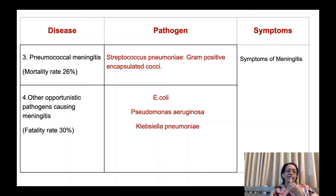Fatality rate may reach up to 30% for other meningitis-causing pathogens. These include Escherichia coli, which is an opportunistic pathogen; Pseudomonas aeruginosa, which is highly resistant to various disinfectants; and Klebsiella pneumoniae. Because of all these types of microorganisms, common symptoms of meningitis are observed.